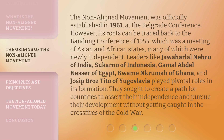The Non-Aligned Movement was officially established in 1961 at the Belgrade Conference. However, its roots can be traced back to the Bandung Conference of 1955, which was a meeting of Asian and African states, many of which were newly independent. Leaders like Jawaharlal Nehru of India, Sukarno of Indonesia, Gamal Abdel Nasser of Egypt, Kwame Nkrumah of Ghana, and Josep Broz Tito of Yugoslavia played pivotal roles in its formation. They sought to create a path for countries to assert their independence and pursue their development without getting caught in the crossfires of the Cold War.